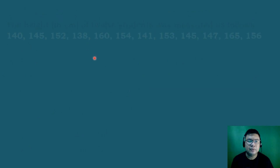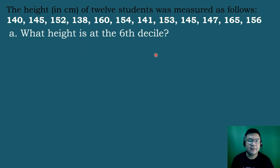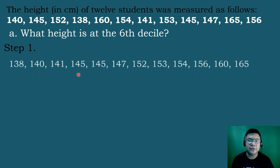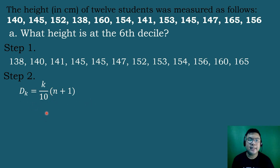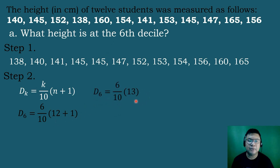Let's move to the next example. Step 1 is to arrange the scores in ascending order from lowest to highest. For step 2, we locate the position of the score using the formula: Decile K equals K over 10 times the quantity N plus 1. We are finding Decile 6, so K equals 6. That gives us 6 over 10 times 12 plus 1, which equals 6 times 13 divided by 10, equals 7.8.